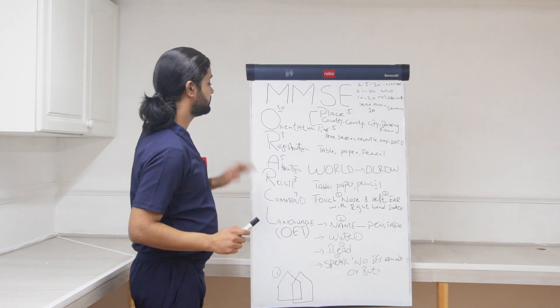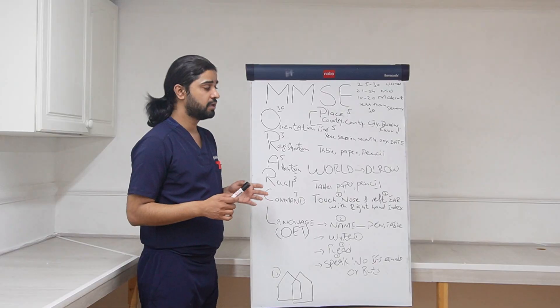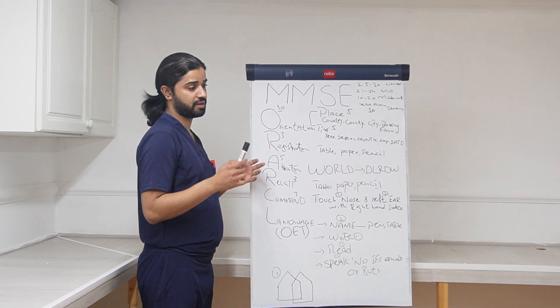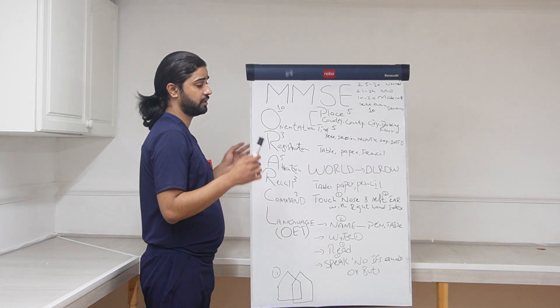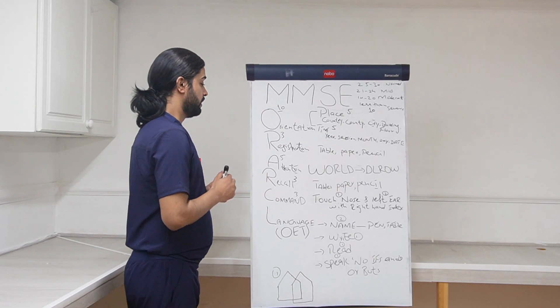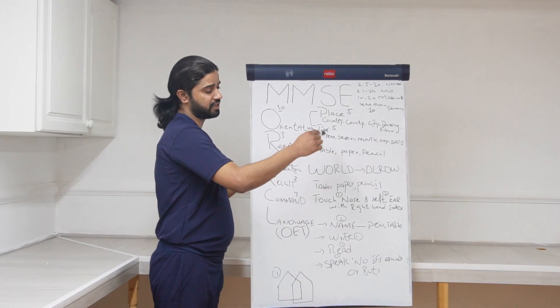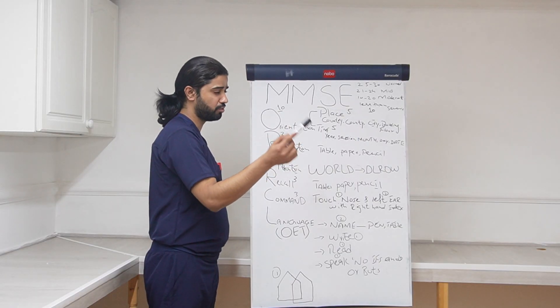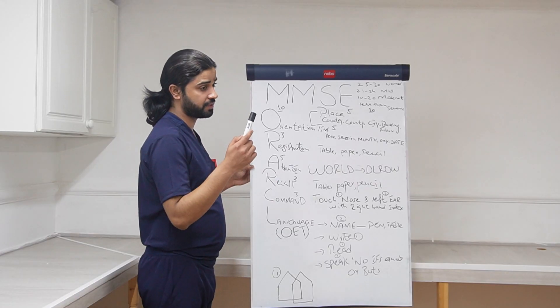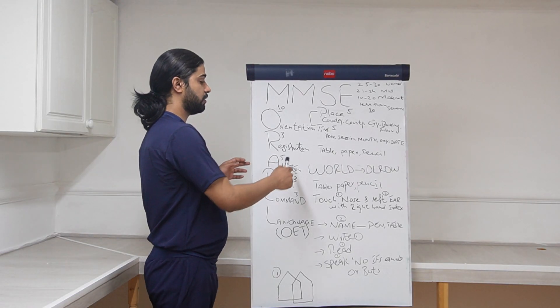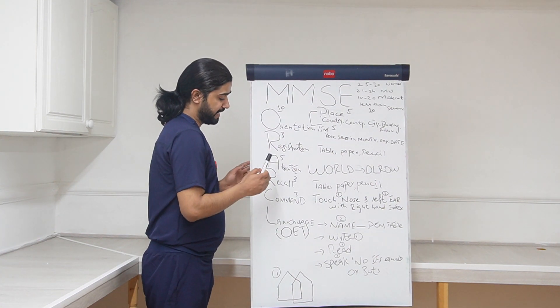Next is registration. You tell the patient that I am going to say 3 words. You need to repeat after me and try to memorize them as I will ask you to repeat and recall afterwards. So this has 3 marks. You are going to say 3 words regarding any object that is available in the room, in the examination room. You can say table, paper, and pencil. Ask the patient to repeat. Patient is able to repeat all these 3 words, score him 3, and then move to the next question.